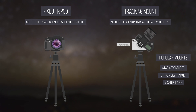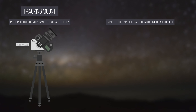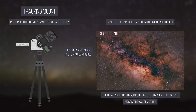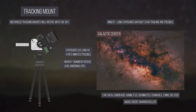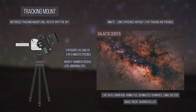Instead of 15 or 20-second exposures with a wide-angle lens, 4 or 5-minute exposures are possible. With longer exposures, higher f-stop numbers can be used to increase sharpness and reduce lens abnormalities, and combined with a greater amount of light falling on the sensor.